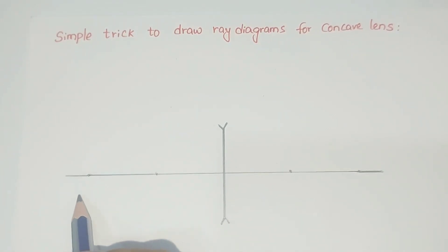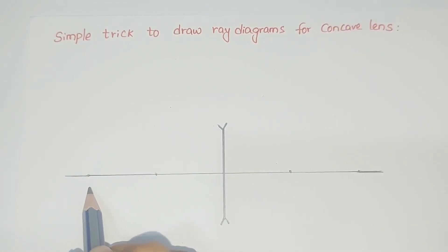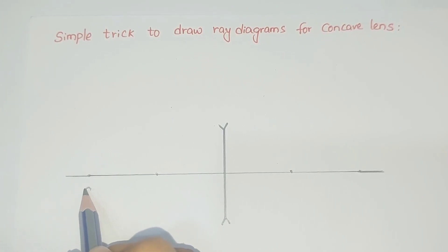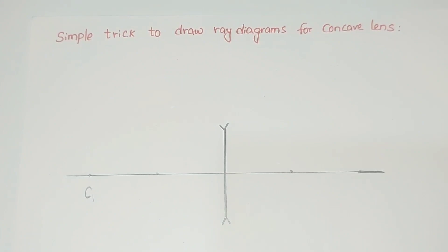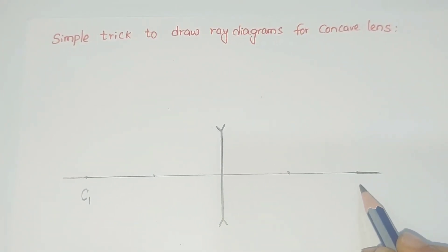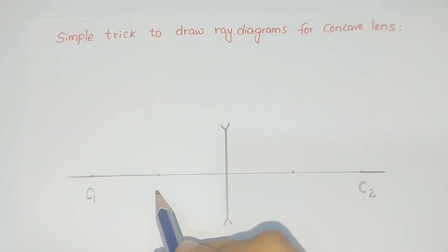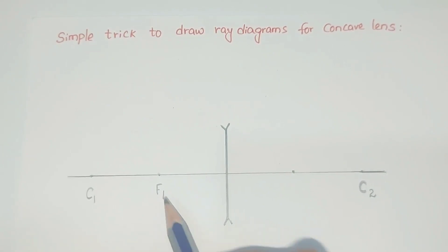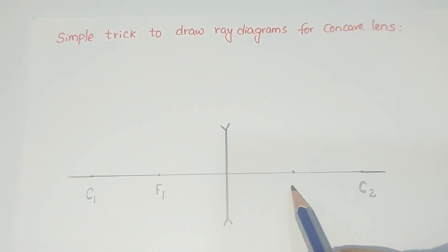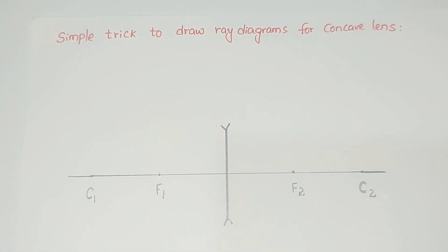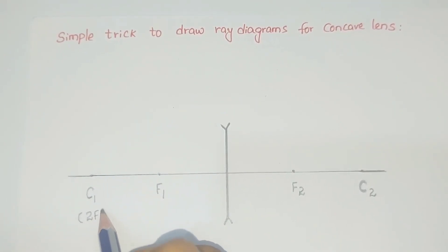The points at the edges — at 0 centimeters and 12 centimeters — represent the centers of curvature of the concave lens. The first center of curvature lies on the left side and the second center of curvature lies on the right side of the concave lens. The point at 3 centimeters represents the first focal point F1, and the point at 9 centimeters represents the second focal point F2. C1 can also be written as 2F1 and C2 as 2F2.